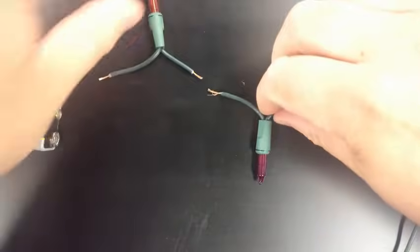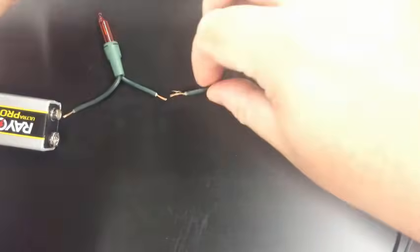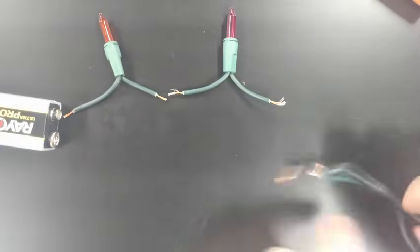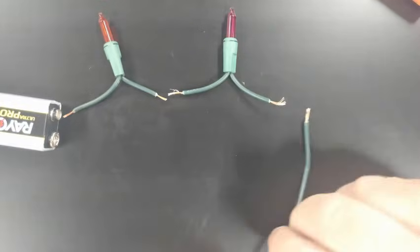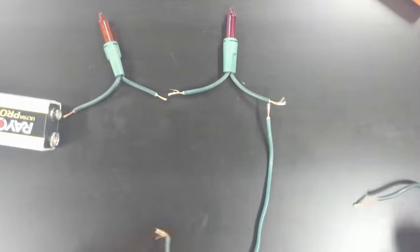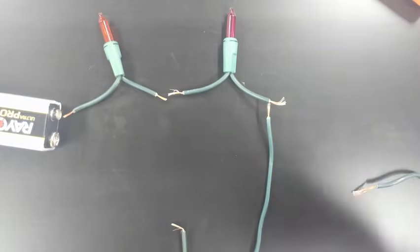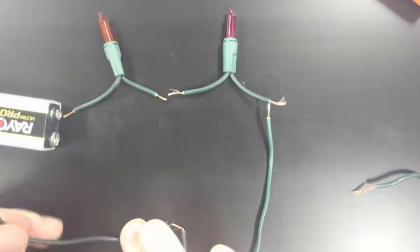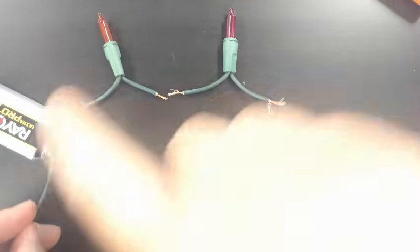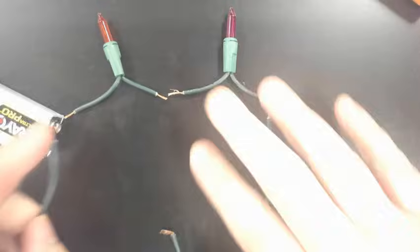So in the previous section we did series circuits. Series circuits look something like this. You have lights and then there would be just one loop that would go back to the battery. So in this case there's only one direction for the electricity to travel.